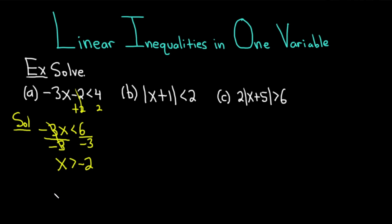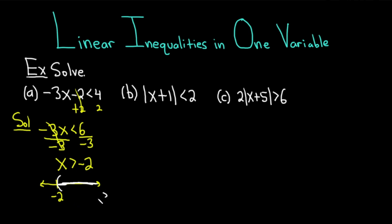To write the answer in interval notation, you could do it in your head, or you could draw a little picture. Here's the real line, and then here's negative 2. We're looking for all of the x's that are bigger than negative 2 — all of the ones over here. But we're not including negative 2, so we use a parenthesis. If instead we had a greater than or equal to, then we would use a bracket. But because it's greater than, it's just a parenthesis. So the answer is parenthesis negative 2 to infinity.